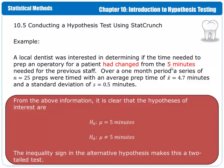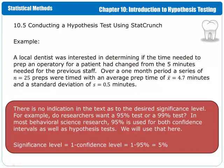We're looking to see if the time had changed from 5 minutes. So 5 minutes is what we hypothesized the value to be, and our null and alternative hypotheses have 5 minutes as the means. We then want to test if the mean is equal to 5 minutes or not equal to 5 minutes. There is no indication in the above text as to the desired significance level. In most behavioral science research, 95% is used for both confidence intervals as well as hypothesis tests. So our significance level is 1 minus our confidence level, giving us 5%.